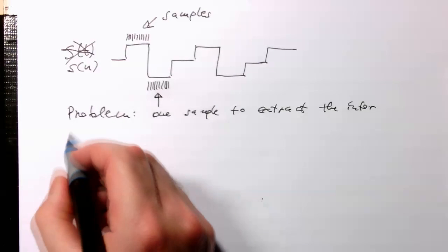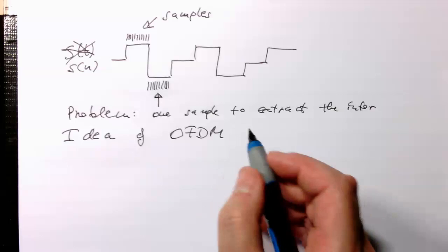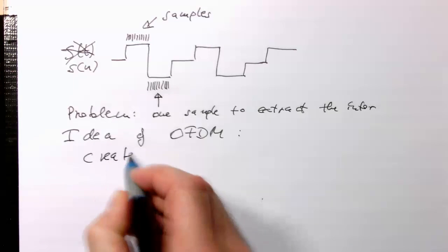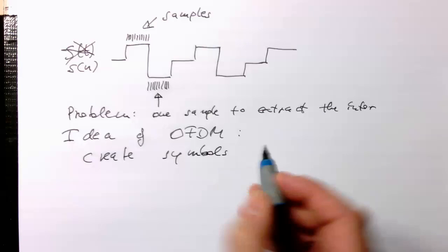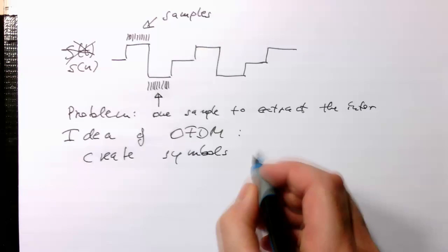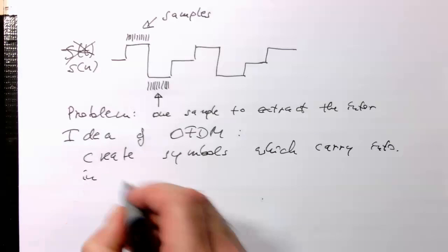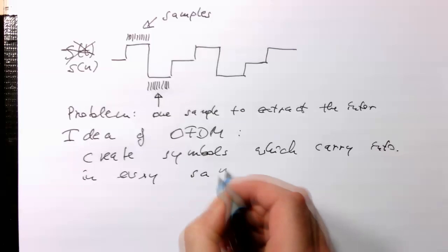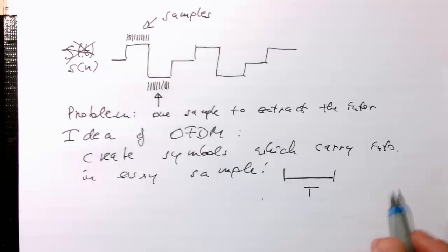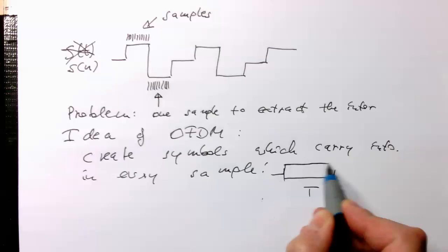So the idea now behind the idea of OFDM is now the following. Now that we create symbols which are much more complex. So we create symbols which carry information in every sample here during T. So if this is our T here, it's our symbol duration and so instead of just having one value, one constant.